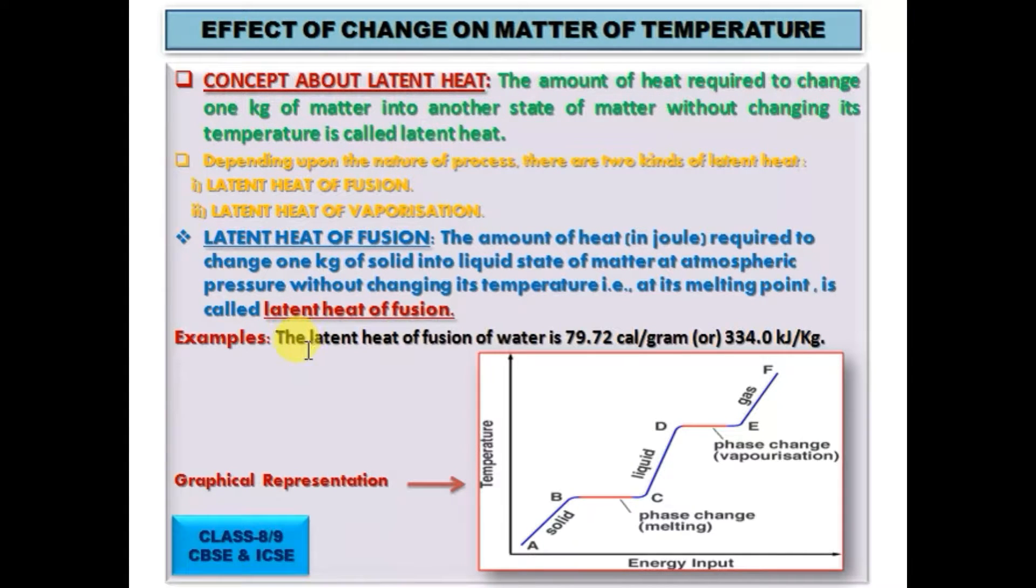Temperature remains constant during melting and boiling of matter as heat energy is used up in overcoming the force of attraction between its particles, and hence the change in state occurs. Heat supplied during melting and boiling remains hidden and is known as latent heat or silent heat.